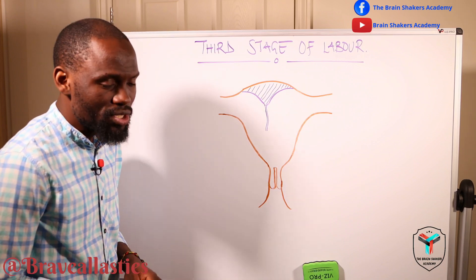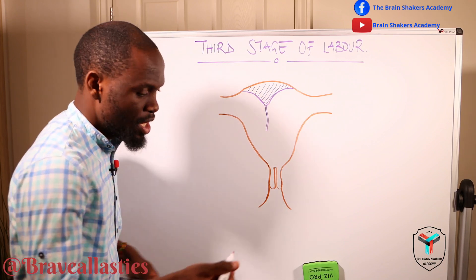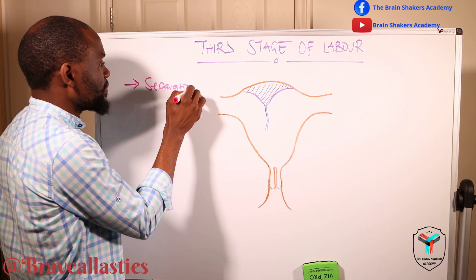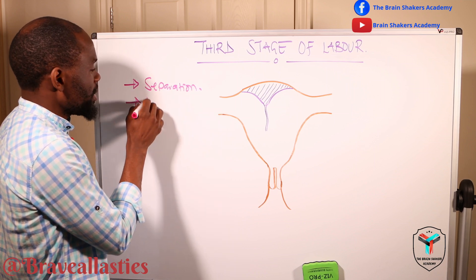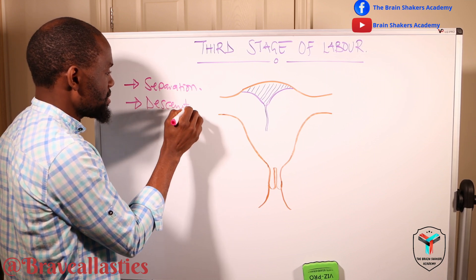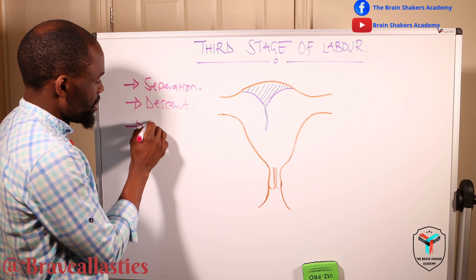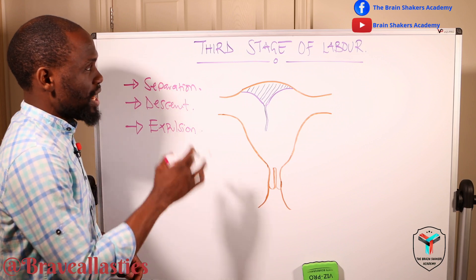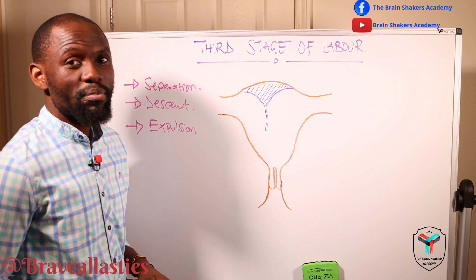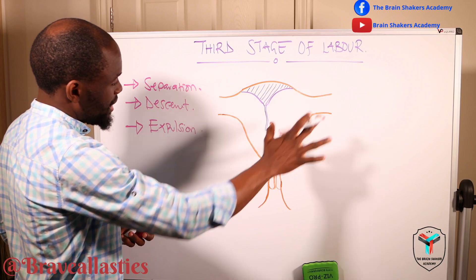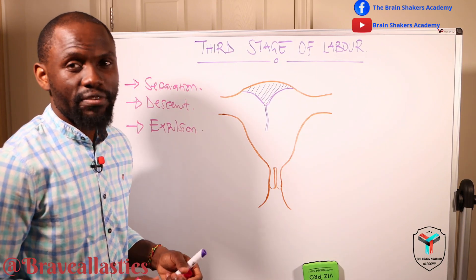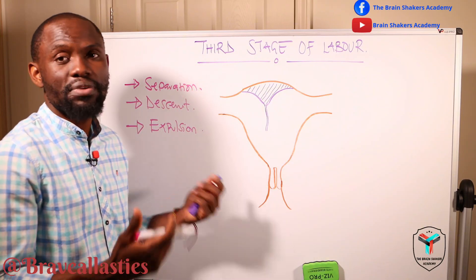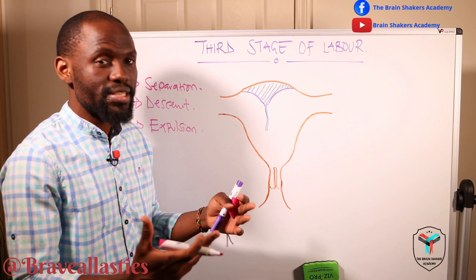When we are talking about the third stage of labor, what in particular are we looking at? Number one, we'll be looking at separation. Number two, we're going to be talking about descent. Number three, we're going to be looking at expulsion. As we discuss the third stage of labor, we may also look at the fourth stage of labor in combination, because the fourth stage is oftentimes combined with the third stage — that is why we say we have only three stages of labor.